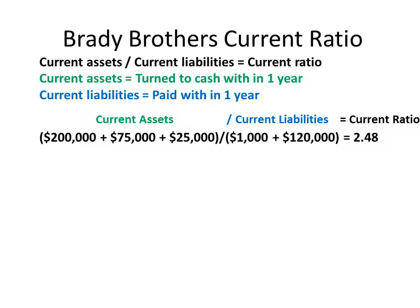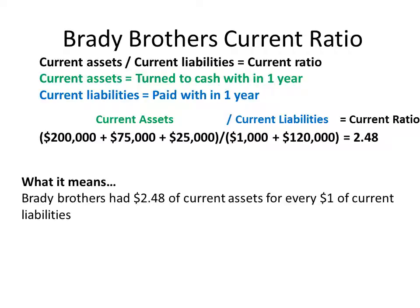Our 2.48 ratio means Brady Brothers has $2.48 of current assets for every $1 of current liabilities. That's really good — they're able to pay their short-term obligations. They have enough assets to turn to cash to pay their short-term obligations. That number will drop significantly depending on the industry when we get to the quick ratio, but it's a really good start that they do have cash to pay their short-term obligations.